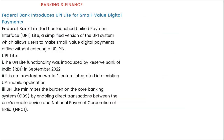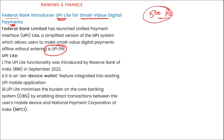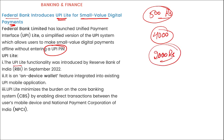In banking and finance: Federal Bank has introduced UPI Light for small-value digital payments. UPI Light is a simplified version of UPI that allows users to make digital payments without entering a UPI PIN. Per transaction limit is ₹500 (increased from ₹200), maximum usage per day is ₹4,000, and the maximum balance the UPI Light account can hold is ₹2,000. This functionality was introduced by RBI in September 2022 and is an on-device wallet integrated into existing UPI mobile applications.